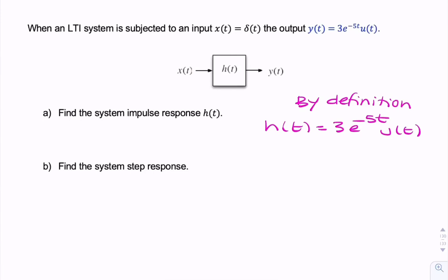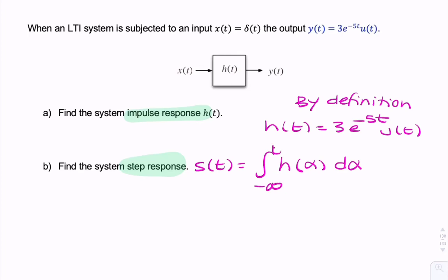Part B is asking for the system step response. Now the step response is simply the integral of the impulse response, and we've just found the impulse response. So the step response S(T) is the integral of H(T) — let's call it H(α) dα from minus infinity to T.